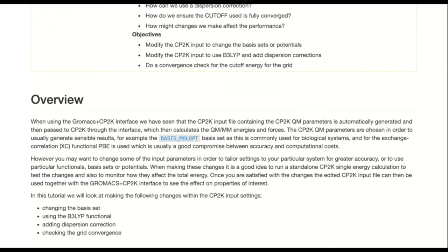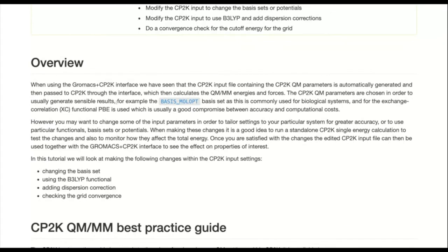In particular, we're going to look at changing the basis set — changing from the standard basis_molopt that we've seen used so far. Looking at using the B3LYP functional; the CP2K inputs we've been using automatically generate with PBE. PBE is a great functional, but if you want a hybrid functional with more accuracy and higher level of theory, we'll cover how to do this within CP2K, adding in a dispersion correction using the Grimme DFT-D3 correction. An important point is how we check the convergence of the grid — tuning the cutoff parameter and verifying you've chosen a good value.